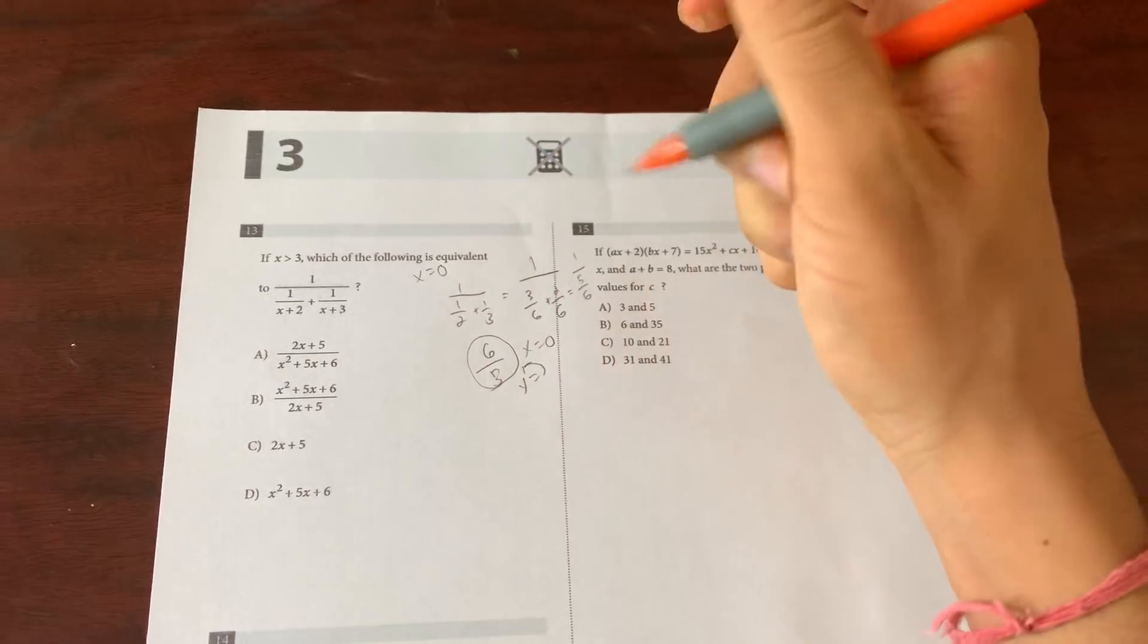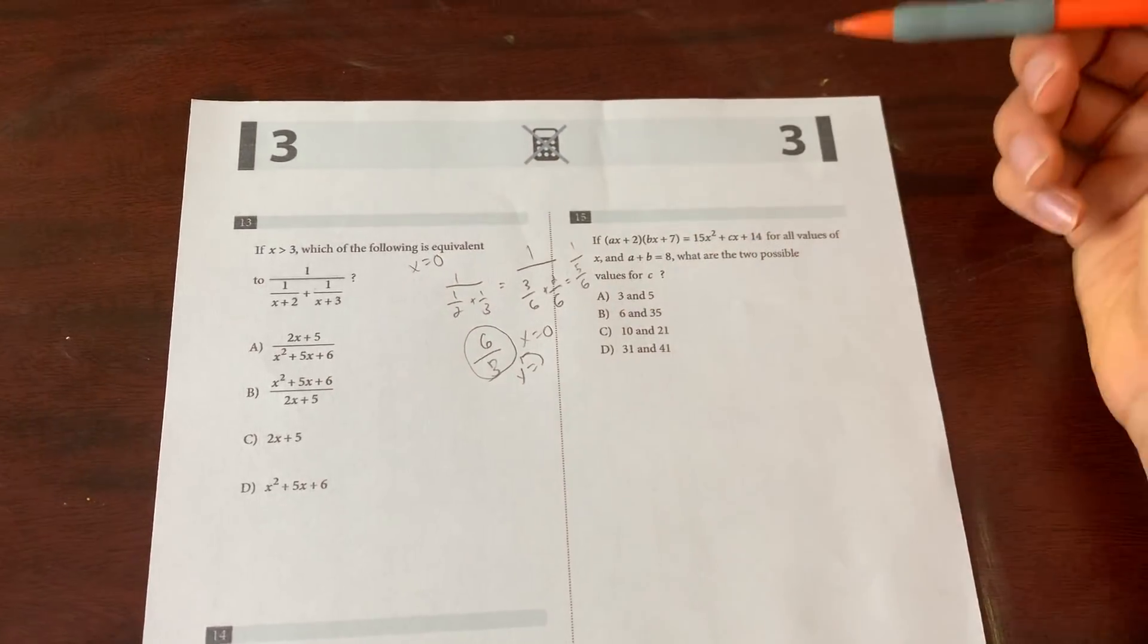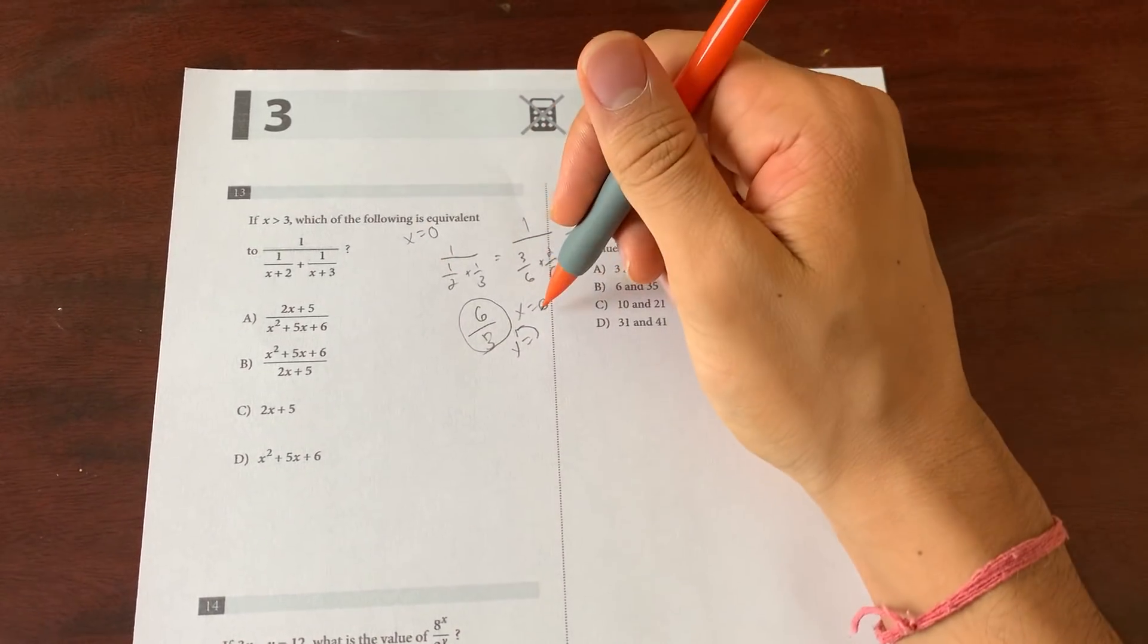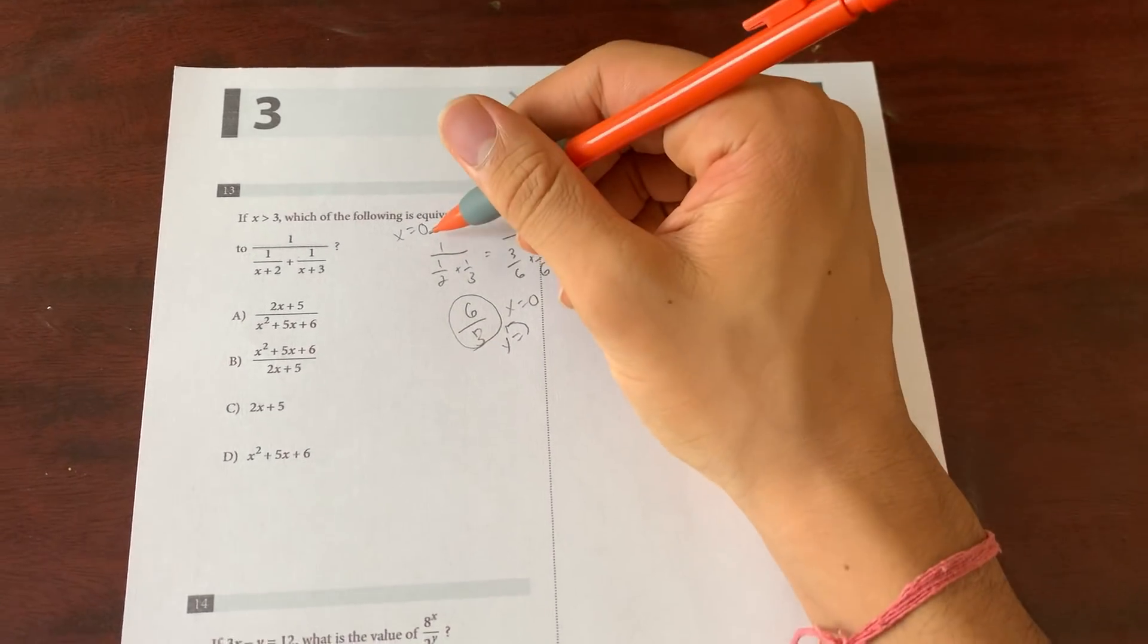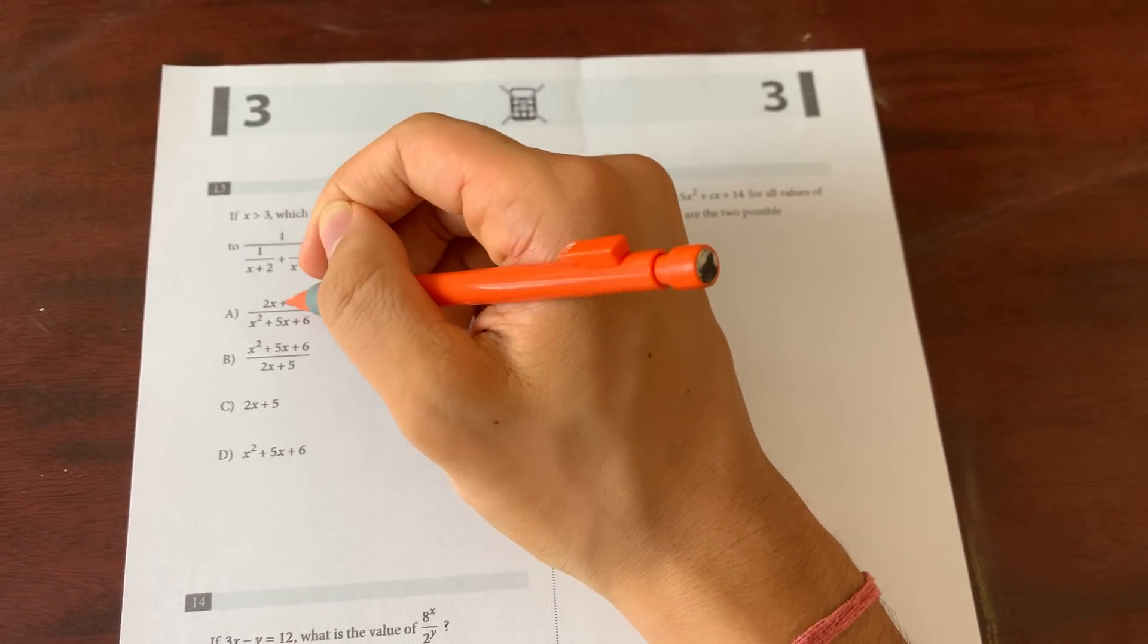So when x equals 0 we can say y equals 6/5. So now you need to find if I plug in x equals 0 to any of these, which one gives me 6/5? This is basically an elimination method and most of the time this eliminates all three.